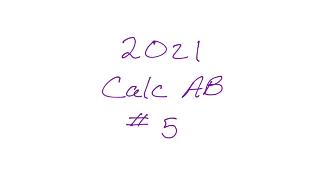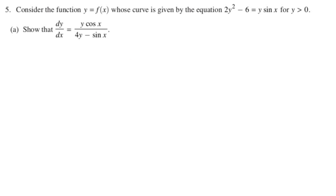Okay, in this video we're going to talk about number 5 from the 2021 Calc AB exam, and it is an implicit differentiation problem, which I always like those, they're always a little weird. So we're given that 2y squared minus 6 equals y times sine of x, and it's actually going to be really important in this problem, y is greater than 0.